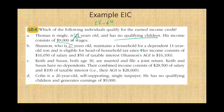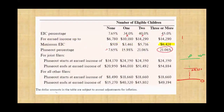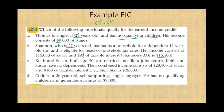Shannon is 27 years old, maintains a household for a dependent child, and is eligible for head of household tax rate. Her income consists of $16,050 of salary and $50 of taxable interest. Shannon's AGI is $16,100. The taxable interest of $50 does not disqualify her. With one child filing as other filers, the phase out doesn't begin until $18,660. She's going to be getting the maximum amount of $3,461 because her income of $16,100 is below even the phase out. So Shannon qualifies and will get the maximum credit.